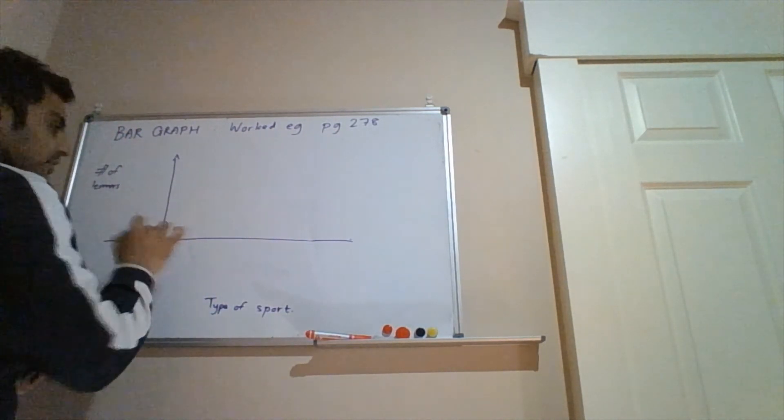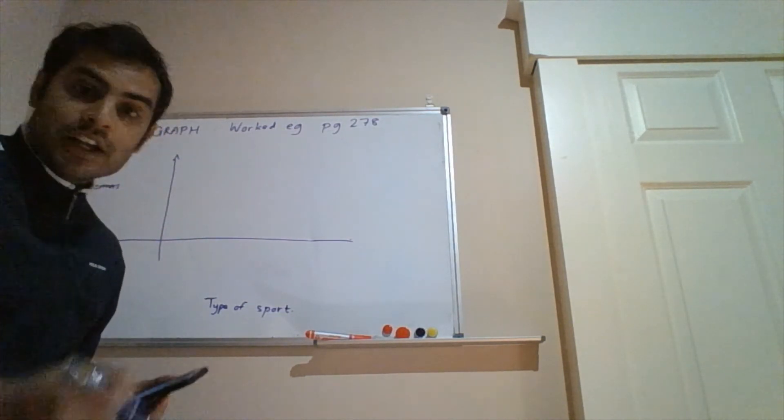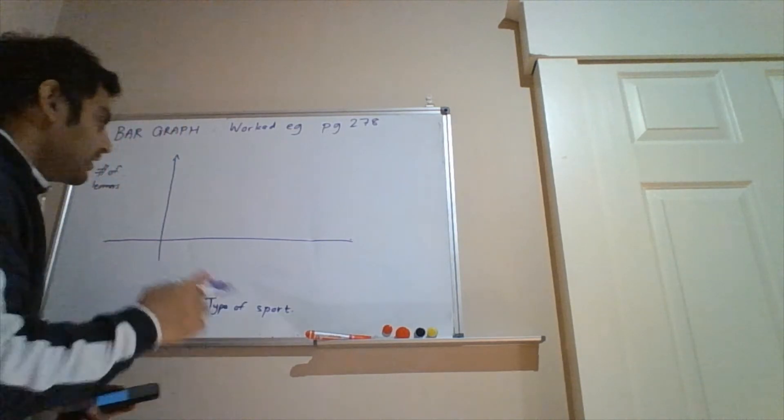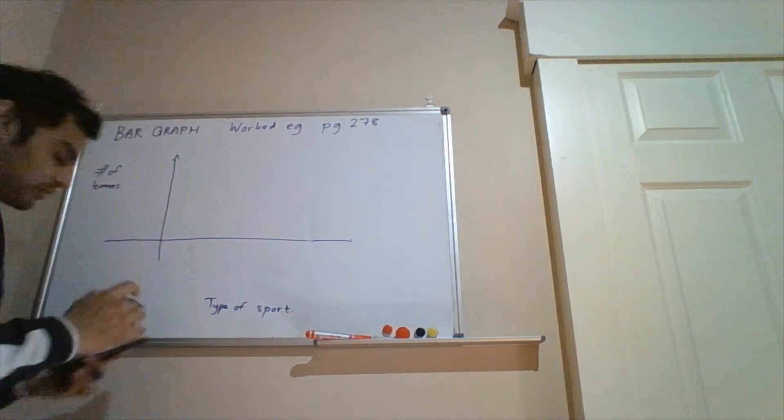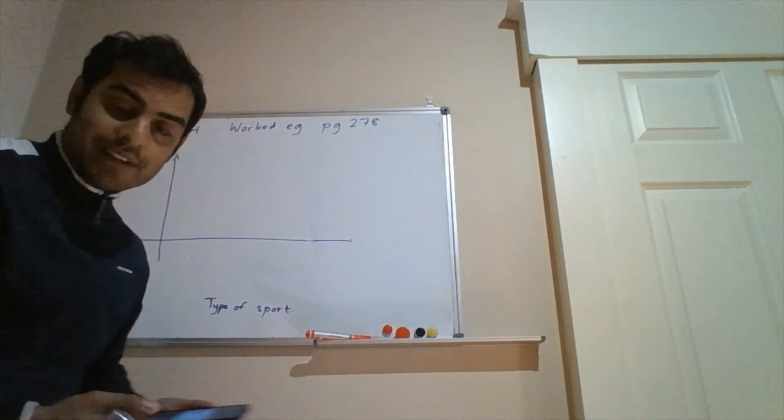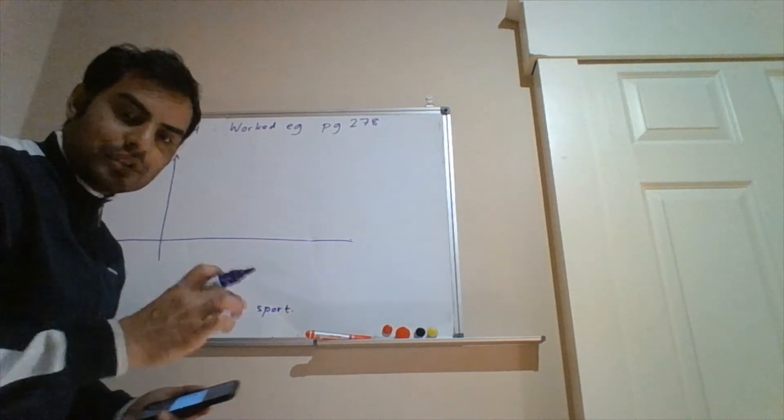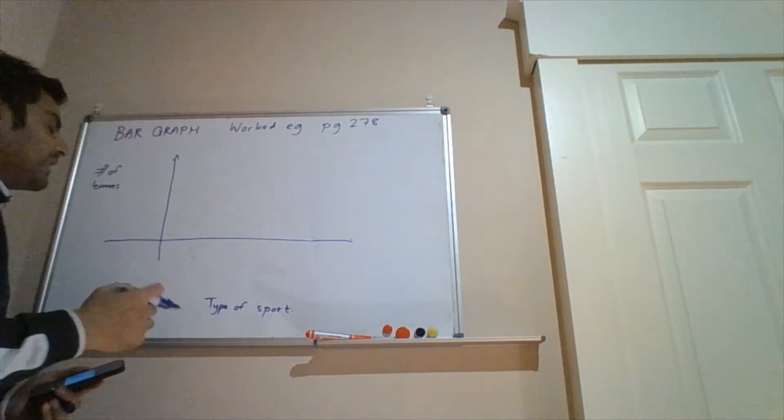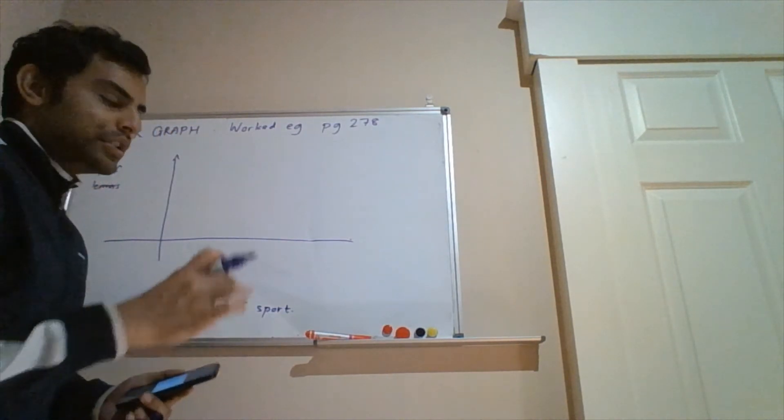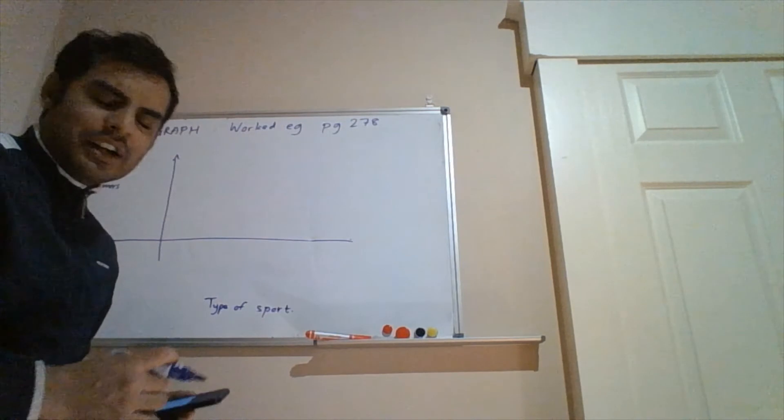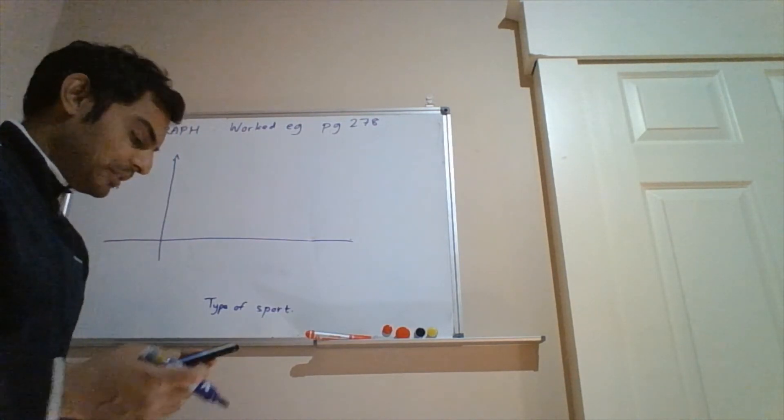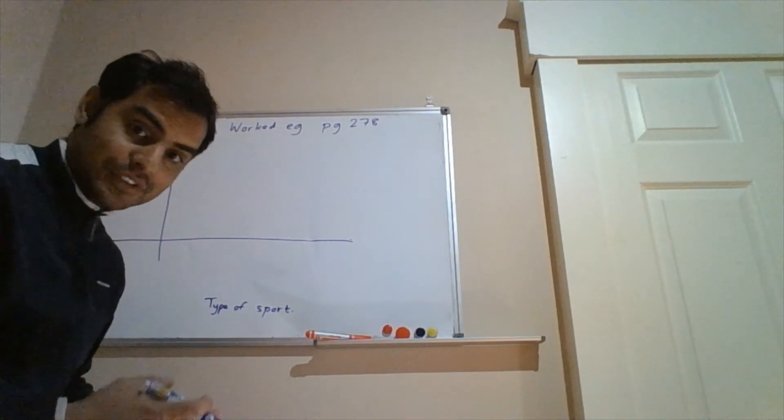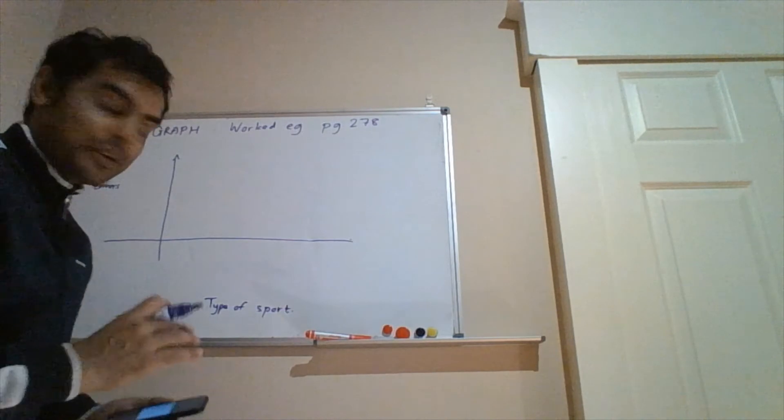So once again, to reiterate, my vertical axis is number of learners. Horizontal axis is type of sport. So type of sport, and the number of learners depends on the type of sport that's being played. So I'm just showing you how to draw it. I know it's already in the textbook, but it just gives you, because you'll be asked to draw graphs, or interpret graphs, or whatever the case may be. So this is just to show you the process.